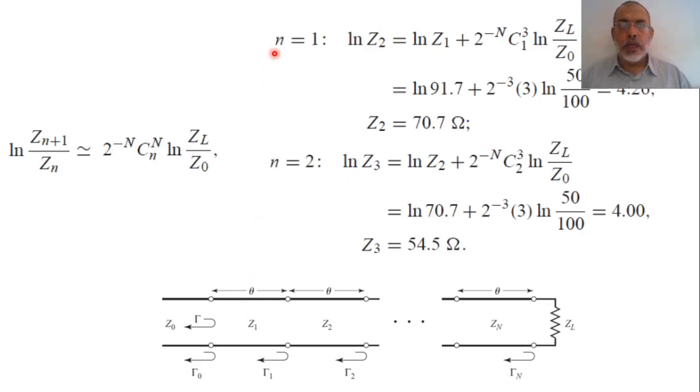In the second step when n equals 1, we are talking about Z2 over Z1. Z1 we already calculated. ln Z2 would equal ln Z1 plus 2 to the power minus N times C1 times ln ZL over Z0. Here ln Z1 is ln 91.7 which we already calculated. C1 is 3 and ZL over Z0 is 50 over 100. By calculating Z value we find it would be 4.26. Z2 would be e to the power 4.26, it would be 70.7 ohms.